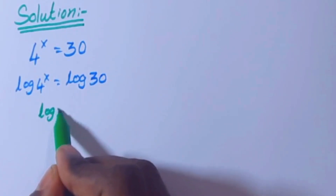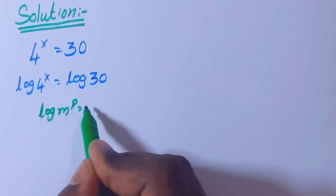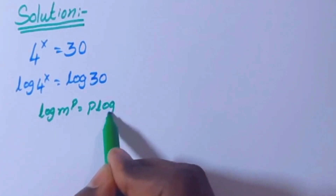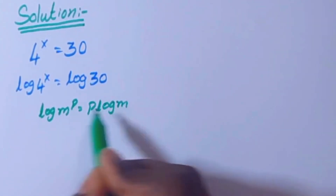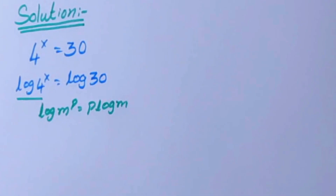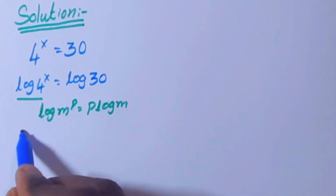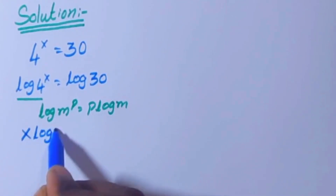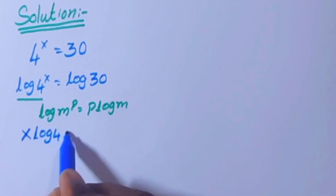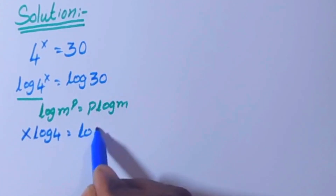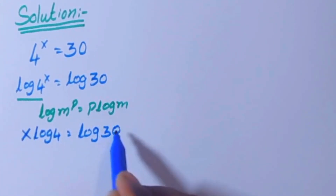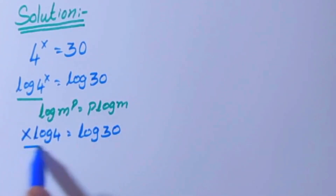We use the log power rule: log m^p equals p log m. This equation is in that form, so x log 4 equals log 30. Divide both sides by log 4.